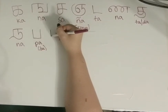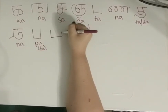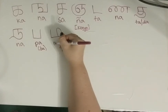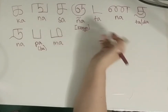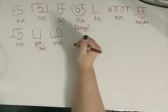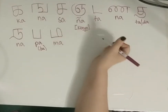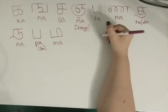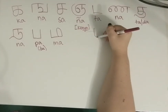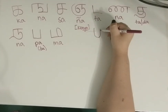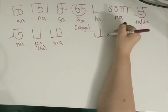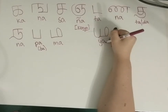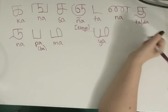Moving on to less complicated letters — this is Ma, just regular old Ma. And this is Ya, just regular old Ya.